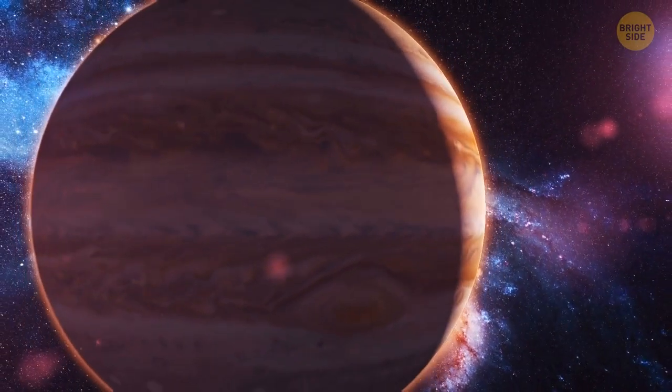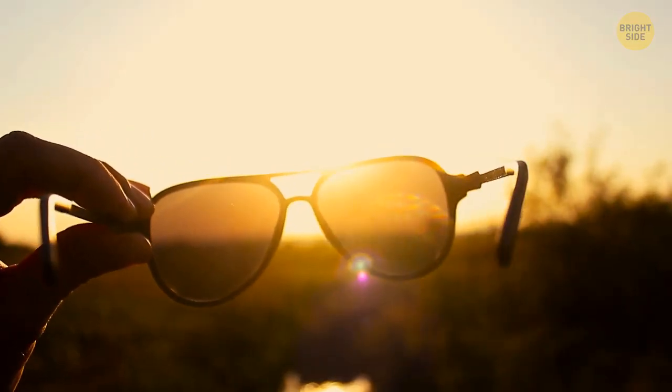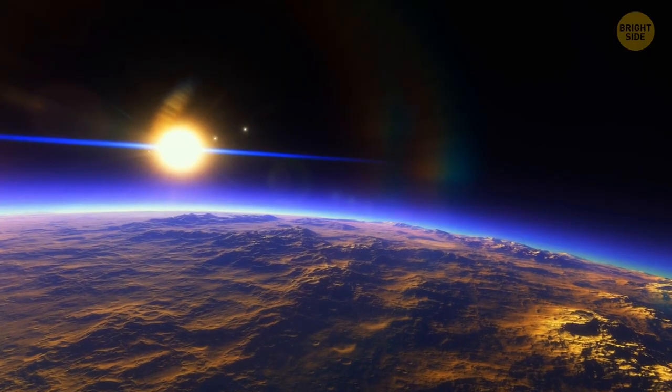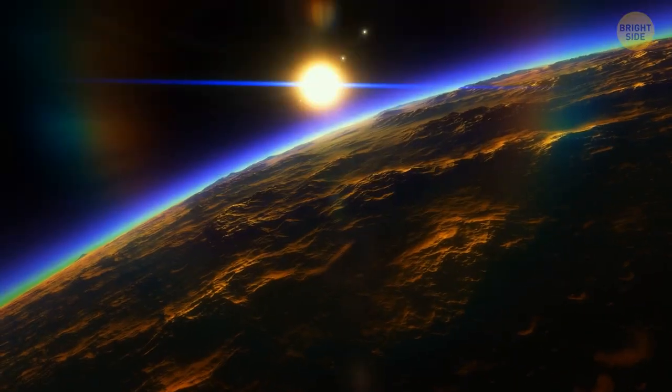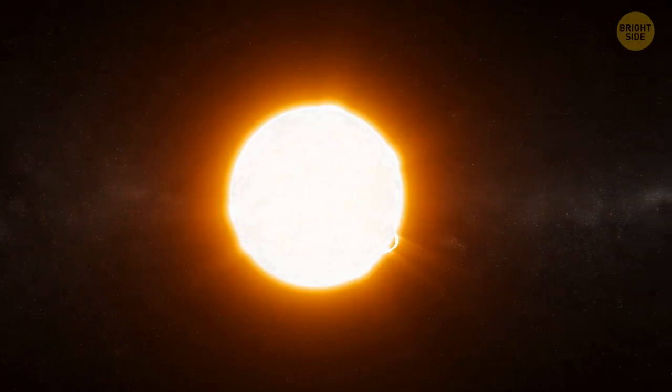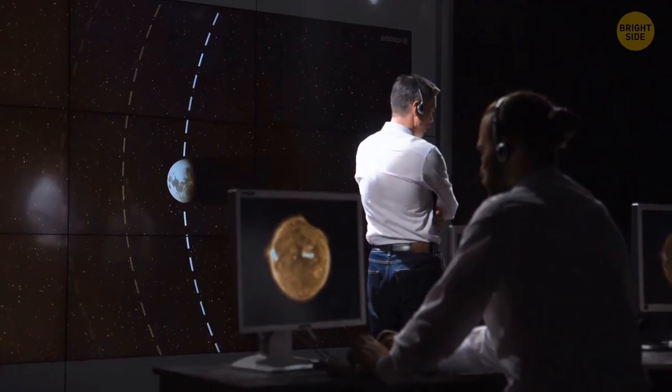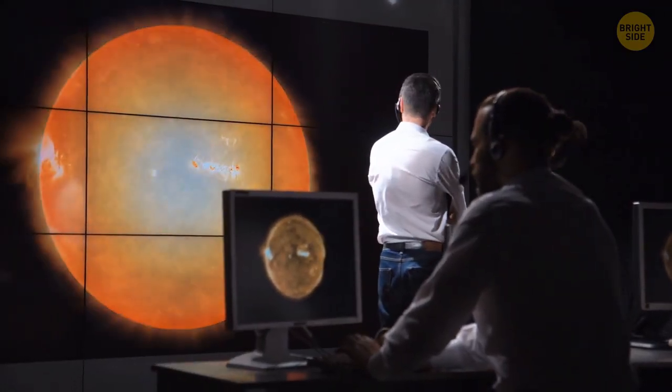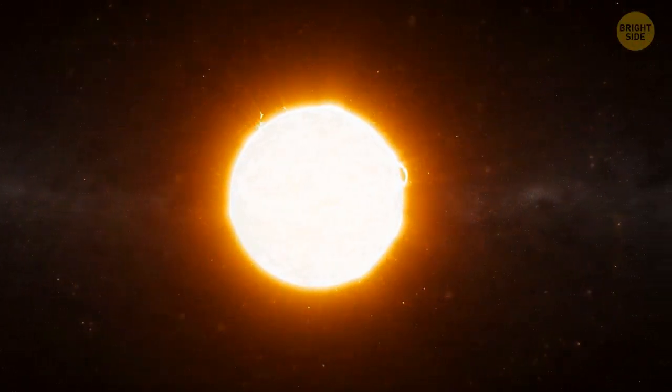If Jupiter was a star, it would also greatly increase the amount of radiation the surface of Earth would receive. Our atmosphere would have to protect us both from the radiation coming from the Sun and from Jupiter's radiation. Red dwarfs are notoriously active. That's why Jupiter, just like the Sun, would most likely have frequent coronal mass ejections. This is a fancy expression for describing large clouds of electrically charged particles as star releases with a huge burst of speed.